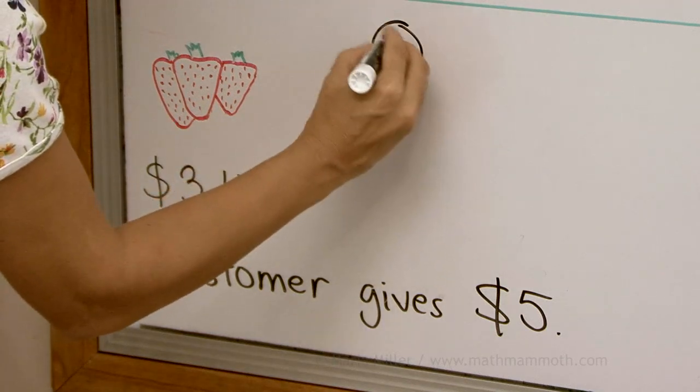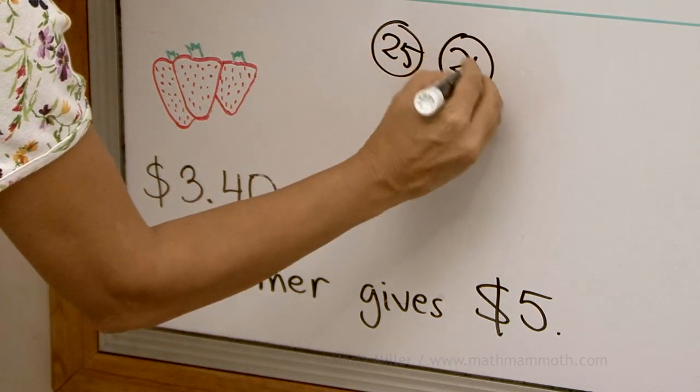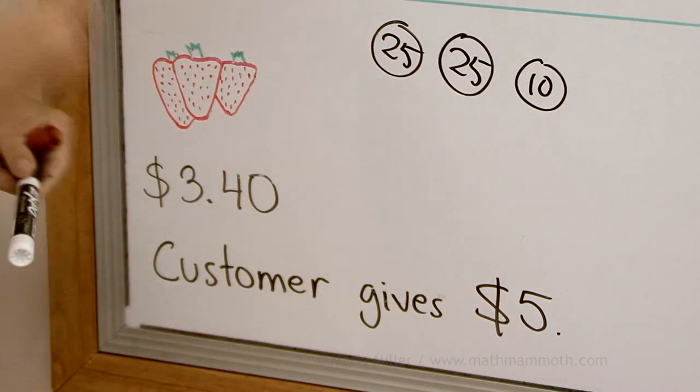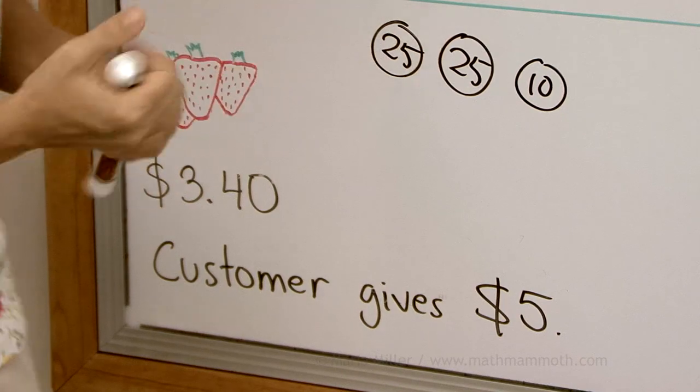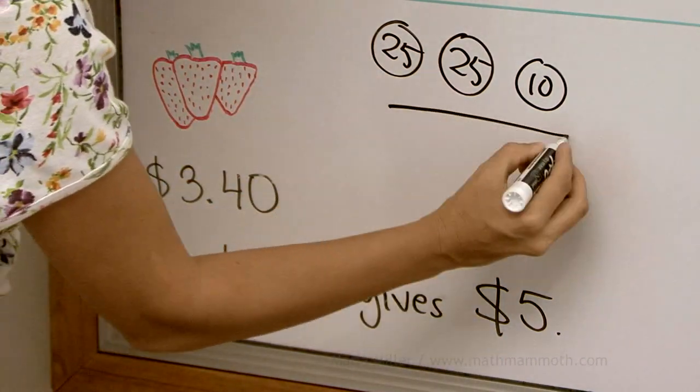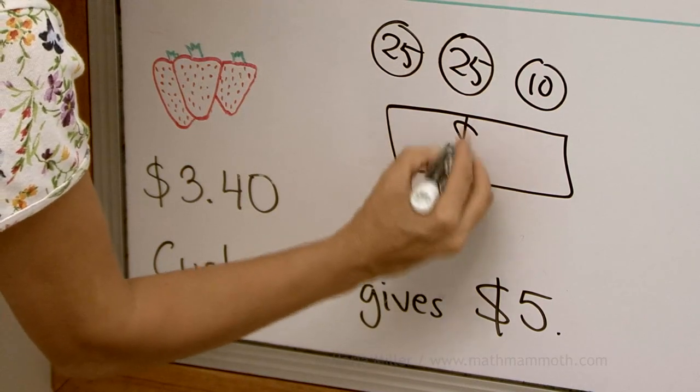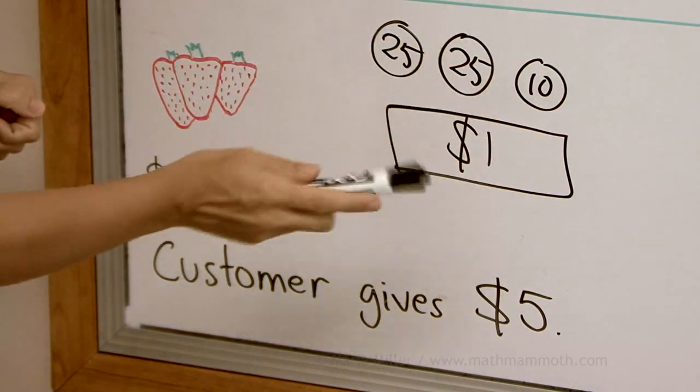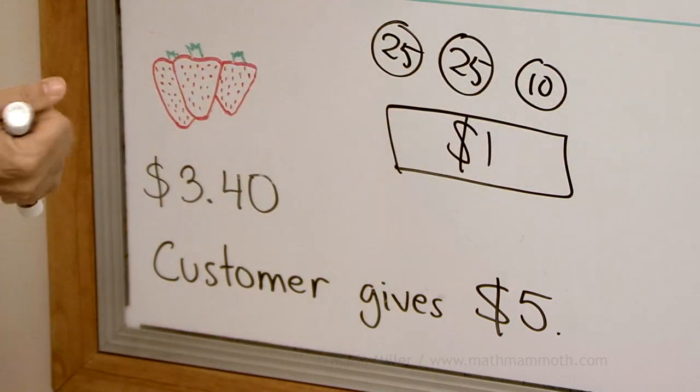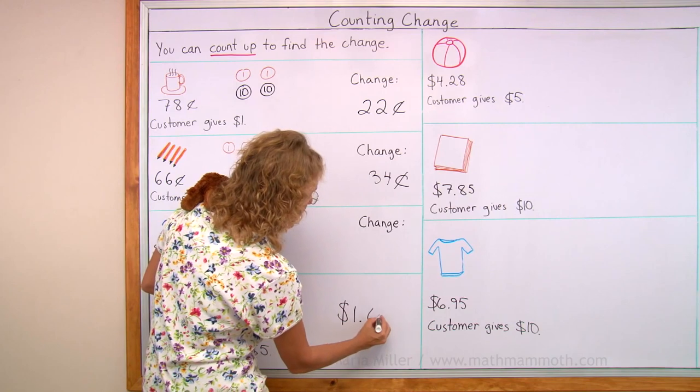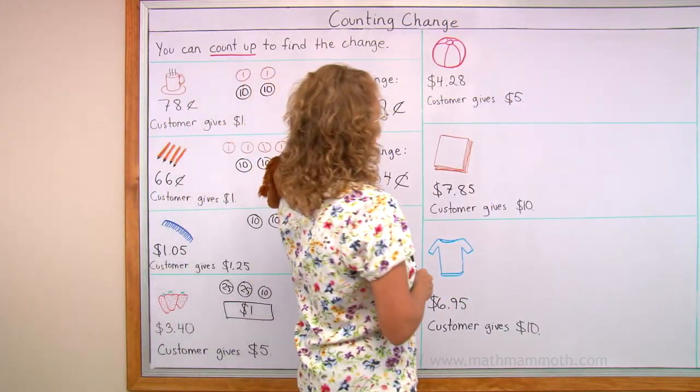Maybe you would use two quarters would be 50 cents and then 10 more. So that's 60 cents. And now we're at $4 and then $1 more to go to $5. Maybe you would use a $1 bill. And that is the change. So we get $1.60.